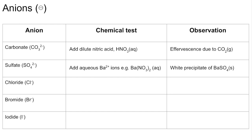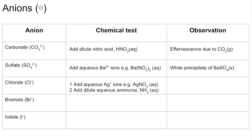Moving on to the halides, starting with chloride. First, add aqueous silver ions in the form of silver nitrate solution, and then add dilute aqueous ammonia. You'd expect to see a white precipitate of silver chloride, which dissolves in dilute aqueous ammonia.